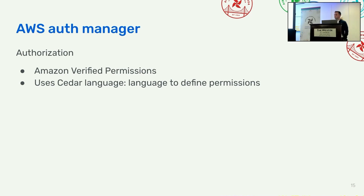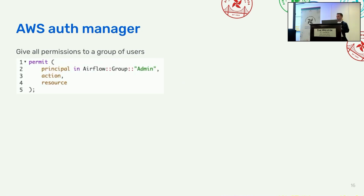For authorization, the AWS AuthManager uses Amazon Verified Permissions, which is an AWS service that handles authorization requests. Underneath, it uses Cedar language, which is used to define permissions. We're going to go through four different examples of how to define permissions in Amazon Verified Permissions using Cedar. Let's first quickly look at how a permission is defined in Cedar language.